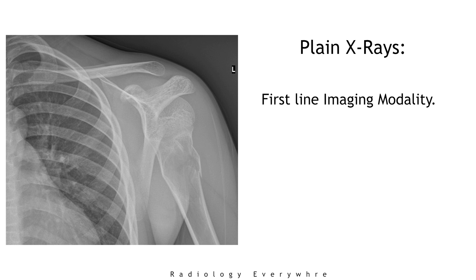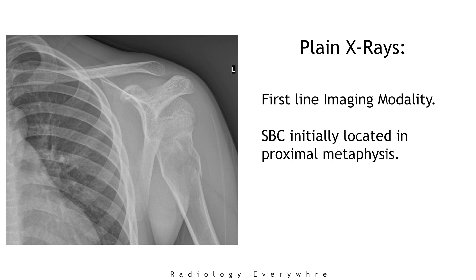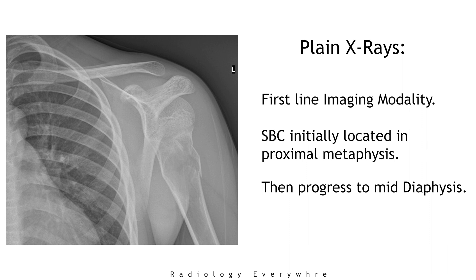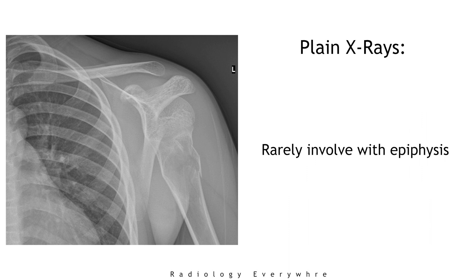Plain x-rays are the first-line imaging modality. These simple bone cysts are located in the proximal metaphysis of the humerus or femur, then progress toward the diaphysis with skeletal growth and eventually reach the mid-diaphysis, at which time they are usually healed. Occasionally, these cysts adhere to the growth plate with extension into the epiphysis and apophysis, reported in only 2% of cases.